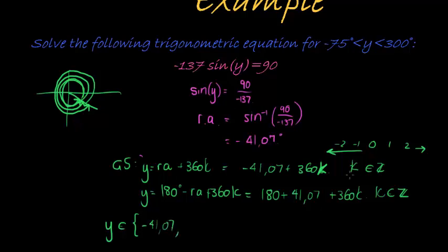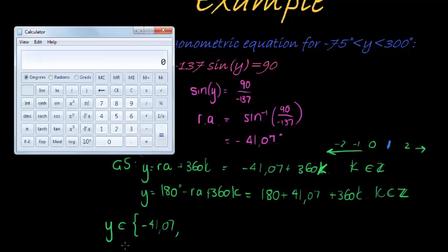Another solution, let's try adding 1, so 360. Negative 41 plus 360, let's try that. Negative 41.07 plus 360 gives me 318, it's a little bit too big, I'm not allowed to go that high, so I'm not going in the positive direction anymore.